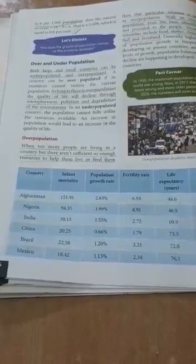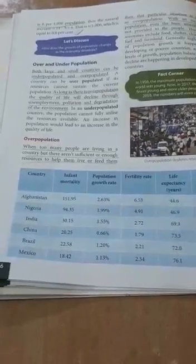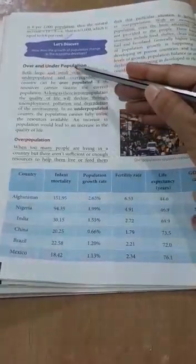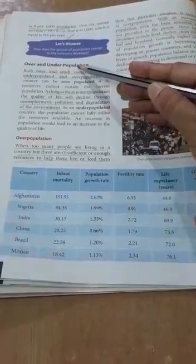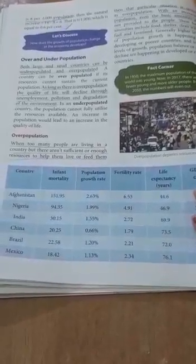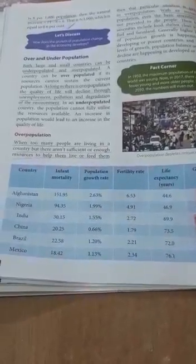Before I proceed, you first need to know the meaning of overpopulation and underpopulation. Overpopulation means the excessive population in a given geographical area where the number of people surpasses the available resources that are required to maintain a basic standard of living.